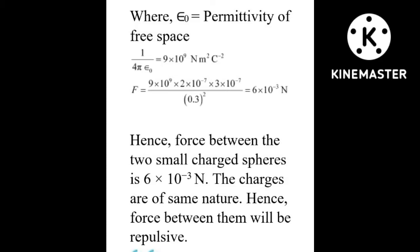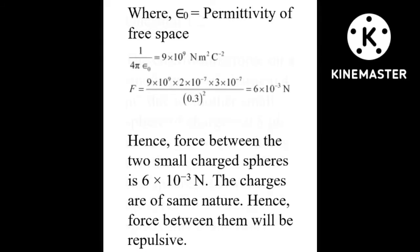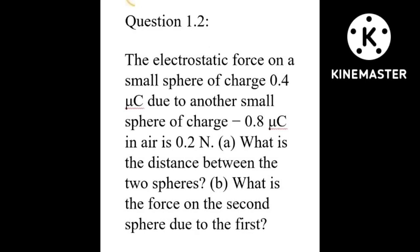Substituting: F = 9×10⁹ × (2×10⁻⁷) × (3×10⁻⁷) / (0.3)². The value is found to be 6×10⁻³ newton. Hence the force between the two small charged spheres is 6×10⁻³ newton. Since the charges are of the same nature, the force is repulsive.